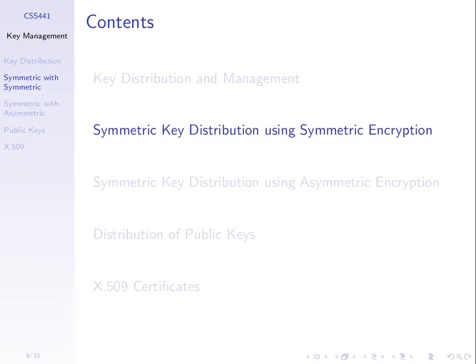The first approach we'll look at is getting a secret shared between different entities using symmetric key encryption. If we want automatic exchange — meaning sending a key across the network — it must be encrypted. We can't send an unencrypted key across the network. In this first approach, we'll send secret keys encrypted using secret keys across the network.